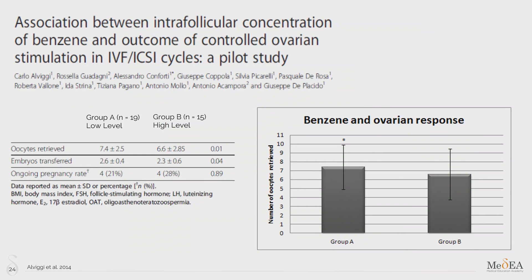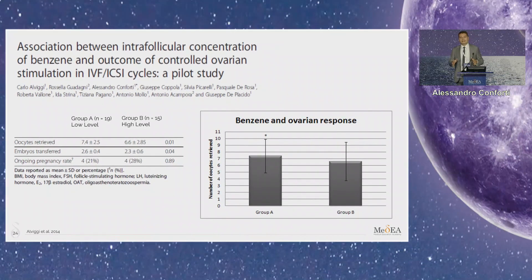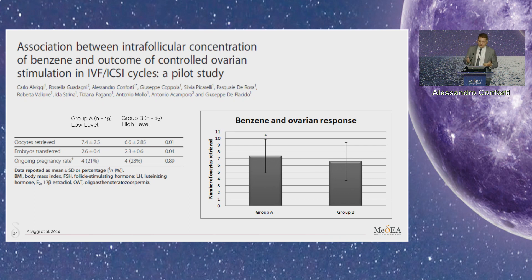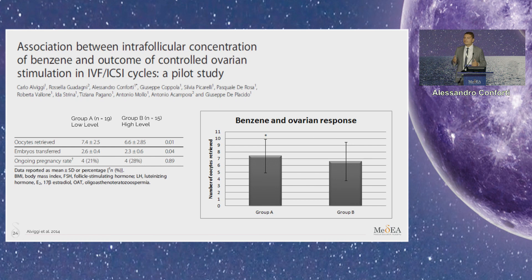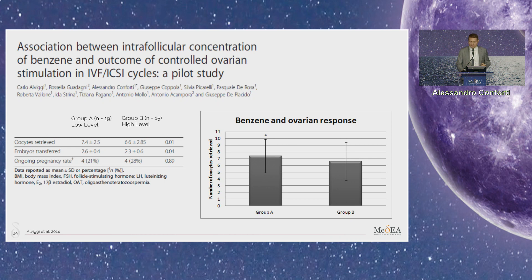Another interesting factor that could be related to the hyper-response profile could be the Byron-Benthal factor. In a study published approximately 10 years ago, we discovered that elevated levels of benzene in follicular fluid could be related with the hyper-response profile. In these women, the number of oocytes retrieved was reduced, and the FSH basal level was higher in women that presented high levels of benzene in follicular fluid. So we should think not only about genetic factors, but also consider possible involvement of environmental factors in the pathogenesis of hyper-response.